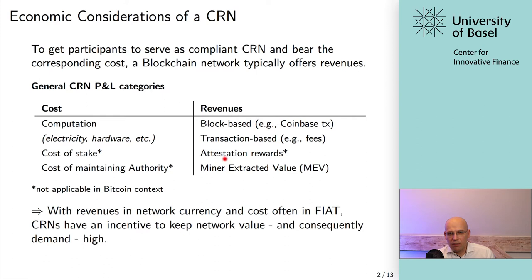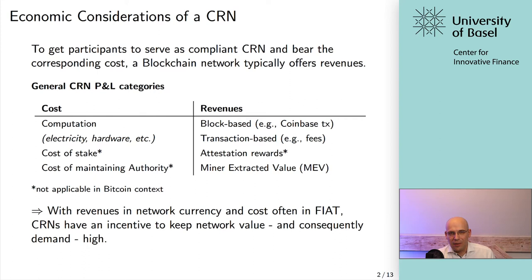Those are the revenues. On the cost side, it depends on the consensus protocol. With Proof of Work, it's the computational resources: electricity, hardware, maintenance. With Proof of Stake, it's mainly the cost of stake — the tokens you buy and lock up to receive lottery tickets that allow you to participate in the consensus protocol — plus some hardware and maintenance. In Proof of Authority, there may be some political cost of maintaining authority, as well as audit costs.